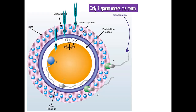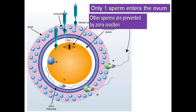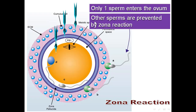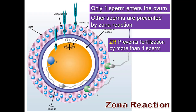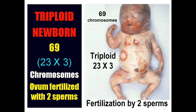Only one sperm enters and fertilizes the ovum. Other sperms are prevented from entering by a reaction called zona reaction. Zona reaction is the inactivation of the sperm receptor sites, which prevents entrance of another sperm once the first sperm enters the ovum, thus preventing polyspermy. A fetus resulting from fertilization by two sperms would have 69 chromosomes — 23 from the ovum and 23 from each sperm.